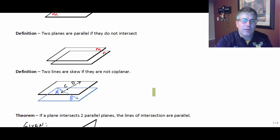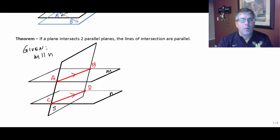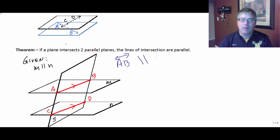We have a theorem — and this is not necessarily reversible. The theorem states: if a plane intersects two parallel planes, the lines of intersection are parallel. So here we're given that plane M is parallel to plane N, and plane S intersects both plane M and plane N. Plane M intersects plane S at line AB, and plane N intersects plane S at line CD. Therefore, line AB is parallel to line CD.